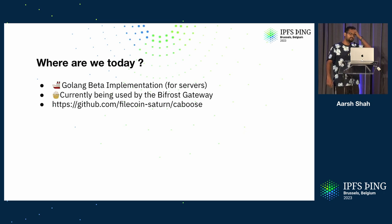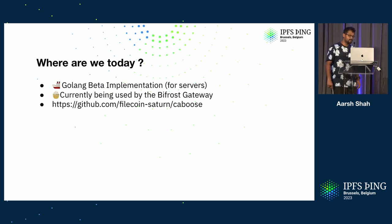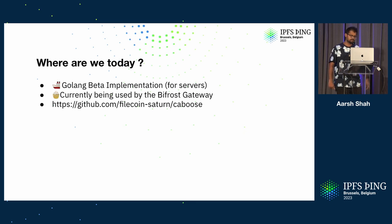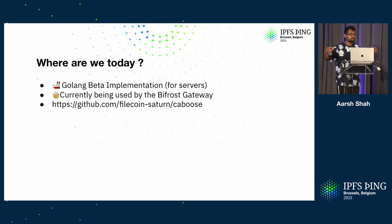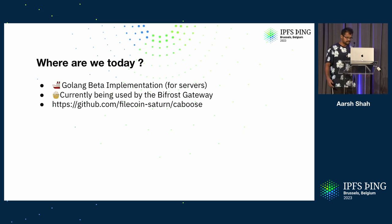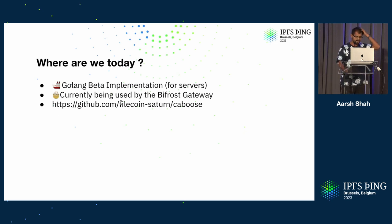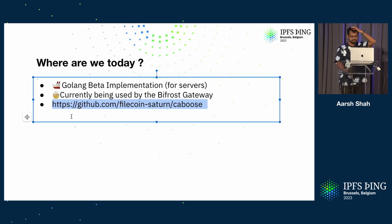Where are we today? Like I said, we started work in late February, so we have a Golang beta implementation, so you can run Caboose on servers. The Bifrost gateway is already using it for Project Rhea to retrieve content from Saturn, so we actually have Caboose running inside Bifrost gateway instances right now as we speak. You can find it on GitHub at Filecoin Saturn / Caboose.